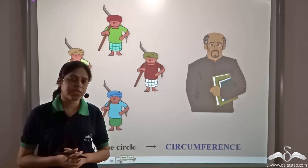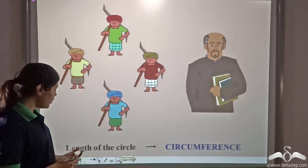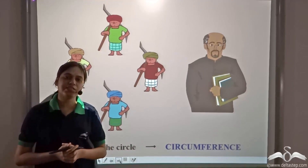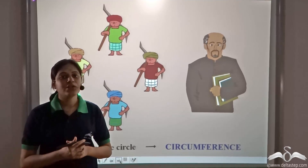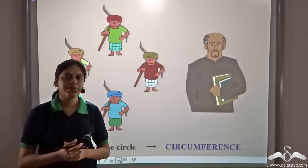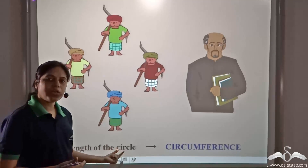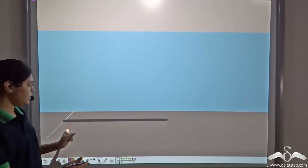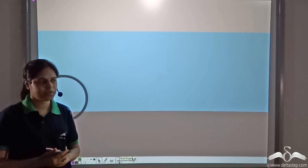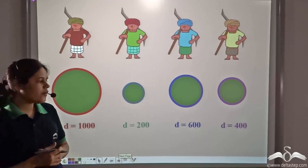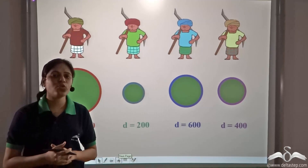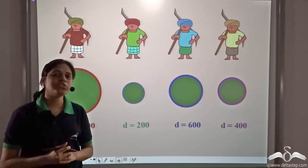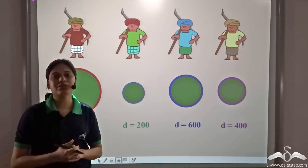The mathematician told them that they would require a gold fence equal to the length of the circle, which is also called the circumference of the circle, in order to fence the circular gardens. So the measurement of the gold fence required would be equal to the circumference of the circle. However, the gardeners had no idea how to calculate the circumference because the gardens were huge and very difficult to measure physically.